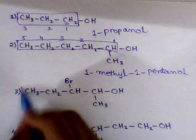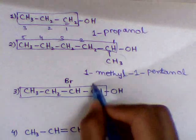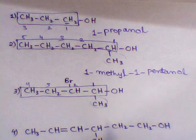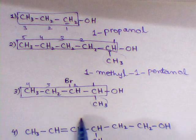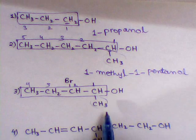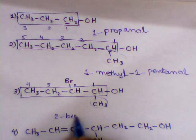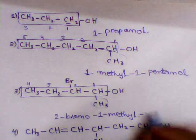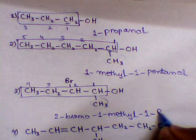In example 3, again we select the longest chain. The carbinol atom should be given the lowest number, so numbering starts here: 1, 2, 3, 4. We have two branches. When we have two branches, we follow alphabetical order. Since bromine (Br) comes first alphabetically, we write the bromine branch first: 2-bromo, 1-methyl. And at position 1 we have the alcohol group, so it's 2-bromo-1-methyl-butanol.